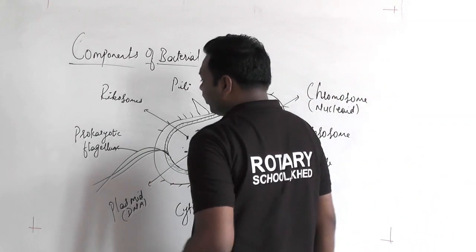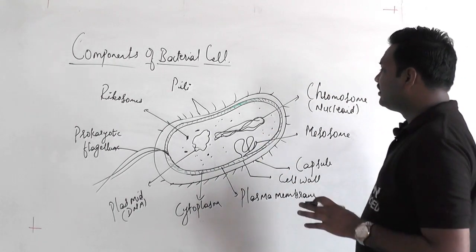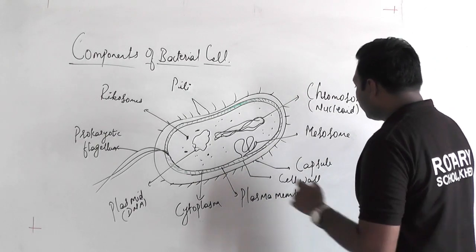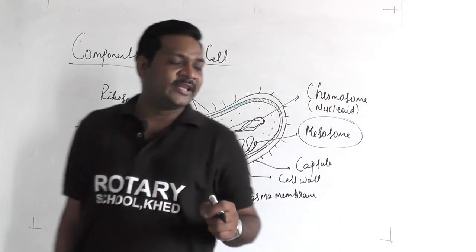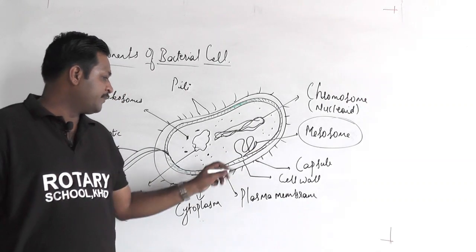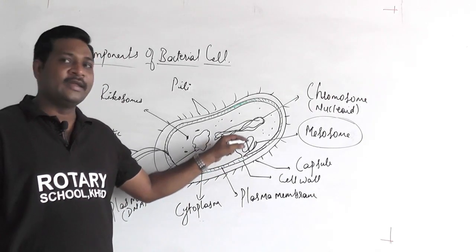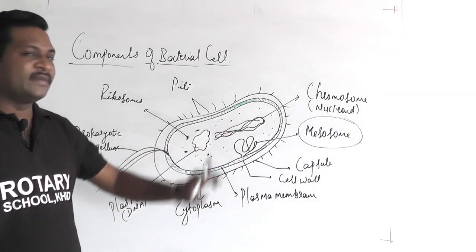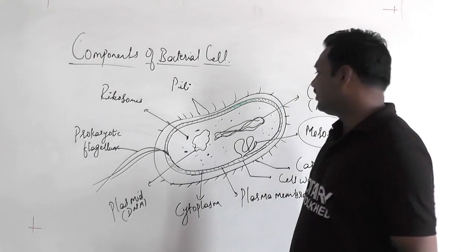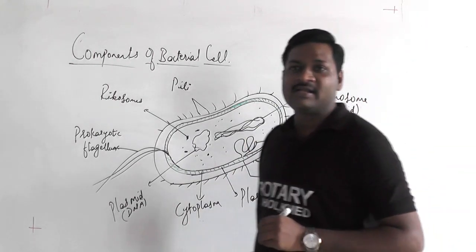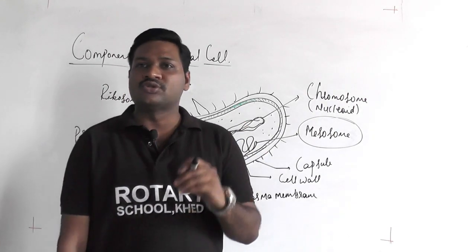The diagram also shows the cytoplasm and the prokaryotic flagellum. This is a typical structure of a bacterial cell. We have discussed that mesosome is a kind of invagination of the plasma membrane — a highly coiled structure inside the cytoplasm which forms the mesosome. Mesosome also acts as a site for respiratory activities, acting as the mitochondria of the bacterial cell.